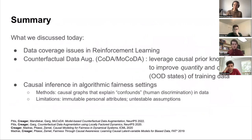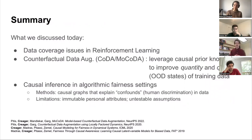We're a few minutes over, so let me wrap things up. Today we motivated the problem of data coverage in reinforcement learning, addressed it through CODA — counterfactual data augmentation — and finally talked about some connections between causal inference and algorithmic fairness, as well as limitations and critiques to keep in mind when working on this from a computer science perspective. Thanks for your time — it was fun to speak with you, and I'm happy to take questions if people can stick around.